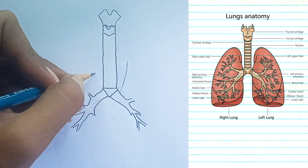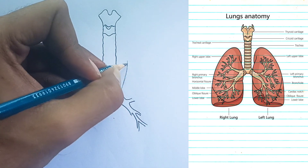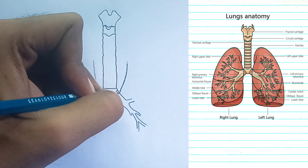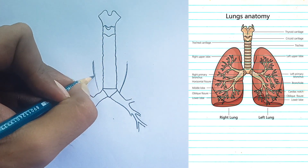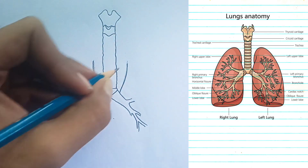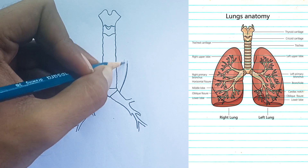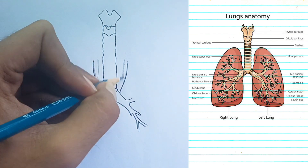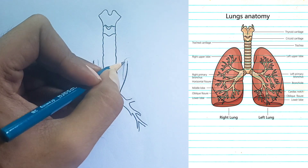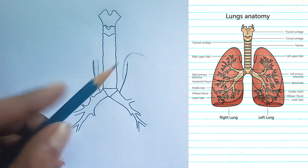Left lung: it is typically smaller and has two lobes — the left upper lobe and the lower lobe. These lobes are separated by the oblique fissure, which separates the upper and lower lobes.